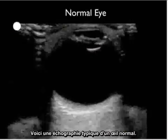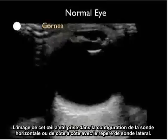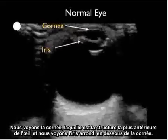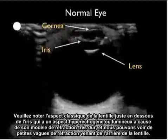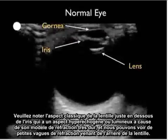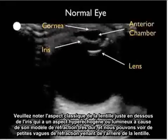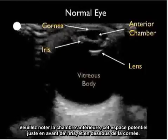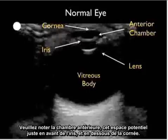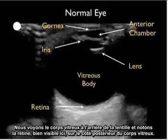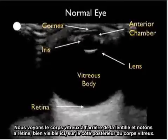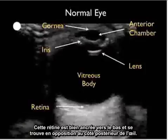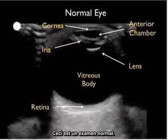Here is a typical ultrasound of a normal eye, taken in the horizontal side-to-side probe configuration with probe marker lateral. We see the cornea as the most anterior structure, with the rounded iris just below it. The lens appears hyperechoic with a bright appearance due to its hard refractive pattern, with refraction waves visible off the back. The anterior chamber is the potential space anterior to the iris and below the cornea. The vitreous body sits behind the lens, and the retina is well seen at the posterior aspect — tacked down in opposition to the posterior wall. That is a normal examination.